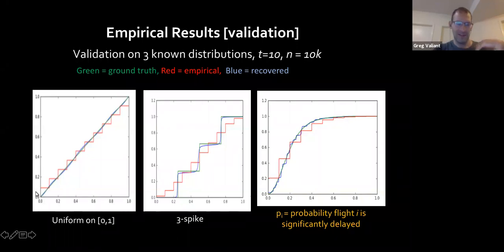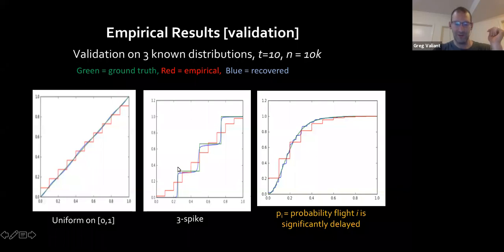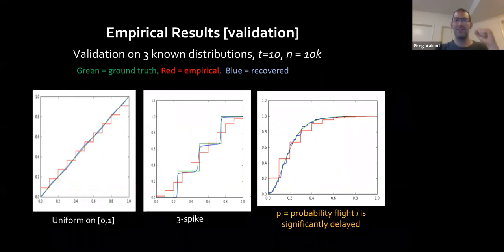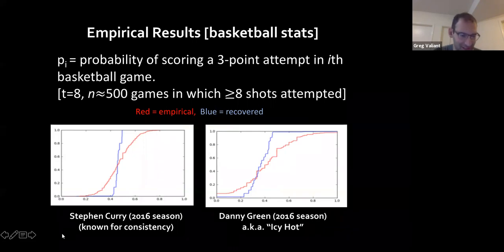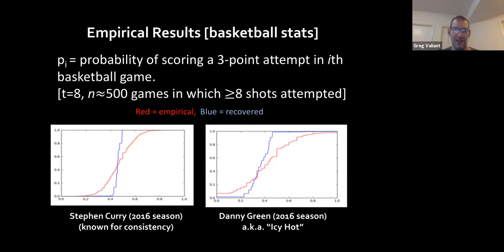If we flip each coin 10 times we get this empirical staircase thing corresponding to the red curve, and applying our machinery recovers something very close to the truth. The second setting has the true distribution as just three spikes at roughly one-third, one-half, and two-thirds. In all these cases we're recovering a good approximation of the truth despite the empirical distribution of the p_i's being quite off.